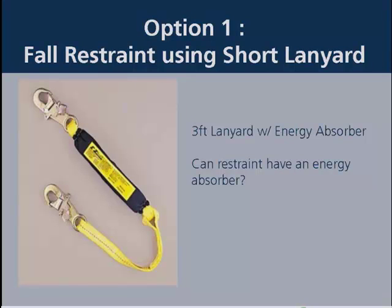Option one is a fall restraint system exclusively using a short lanyard. A three-foot lanyard with an energy absorber can be used. A restraint system can incorporate an energy absorber, but by definition it would not be needed as there is no fall allowed in a restraint system. Depending upon the overall length of the lanyard, a system with an energy absorber can still function as a compliant restraint system.